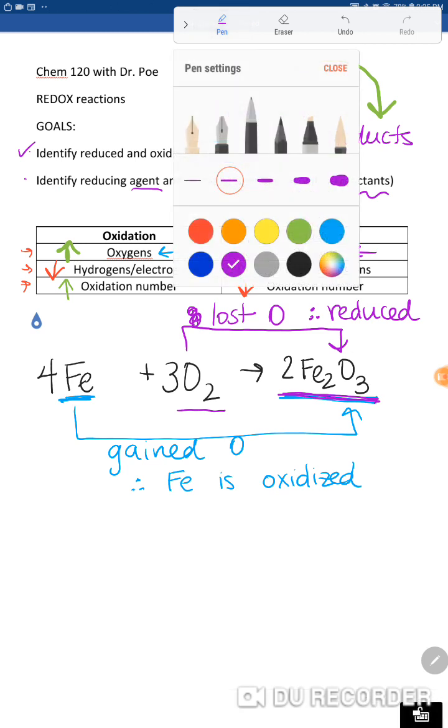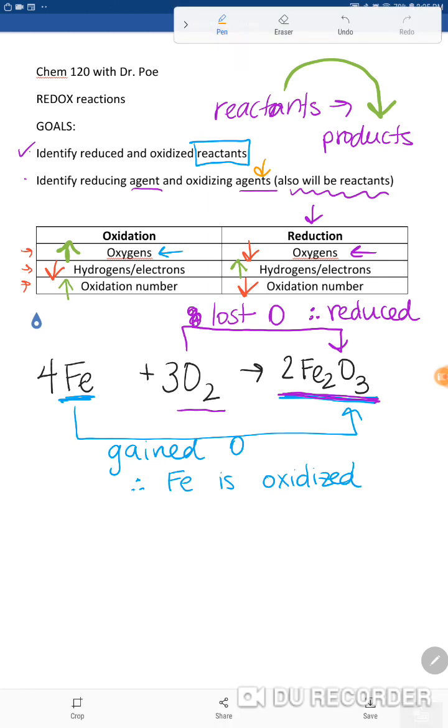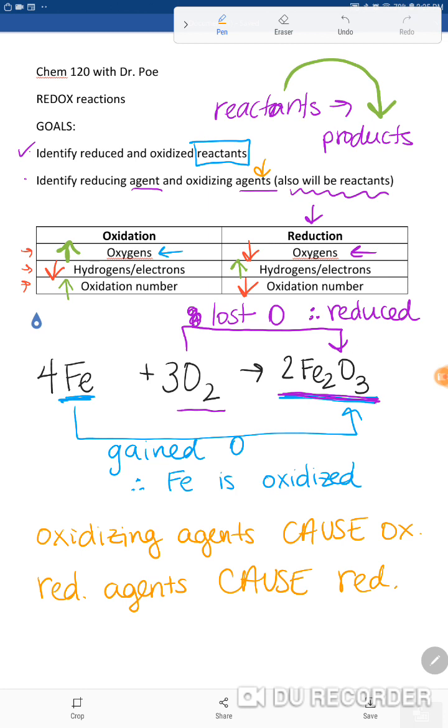The agents cause whatever they're named for. So an oxidizing agent will cause oxidation. Let's write that down—oxidizing agents cause oxidation. And similarly, reducing agents cause reduction. You might have to pause and think about it.